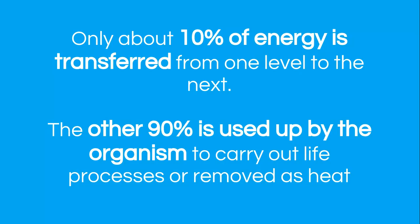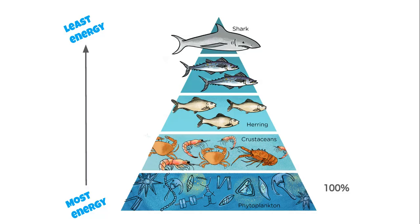Only about 10% of an organism's energy is actually transferred from one trophic level to the next. The other 90% the organism uses to carry out its life processes, and it's removed or could be removed as body heat or thermal energy.